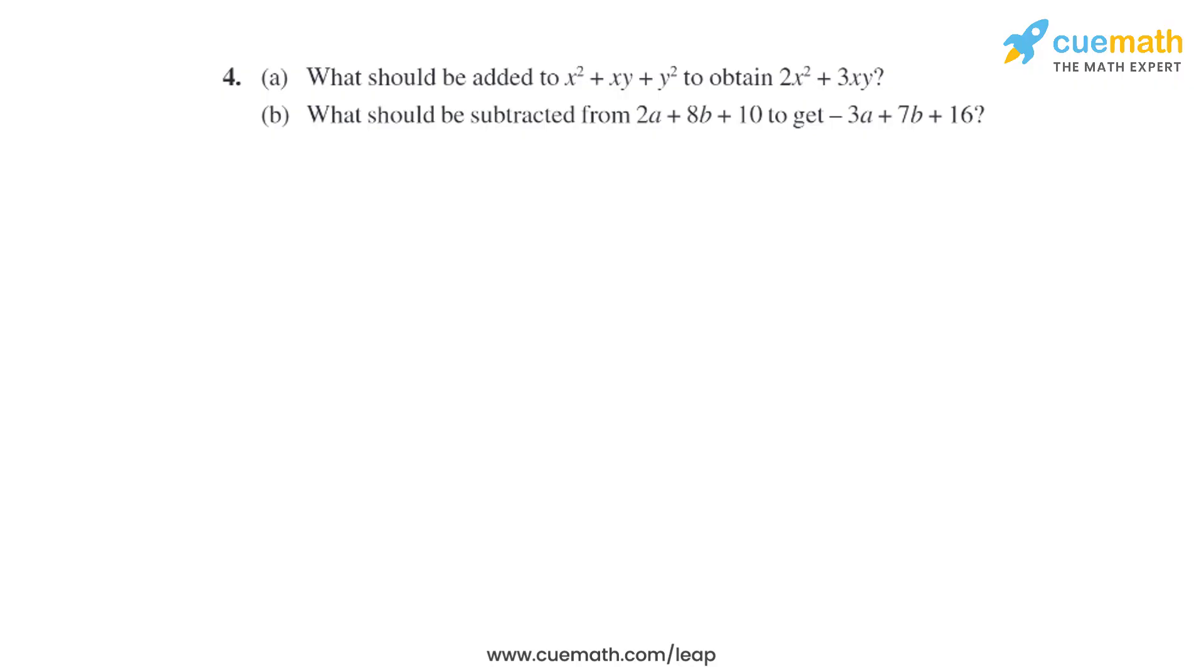Question 4 of this exercise has two parts, so we will begin with the first part. It says what should be added to x² + xy + y² to obtain 2x² + 3xy? So let's say we are adding some term to this, and after adding that term it will become 2x² + 3xy.